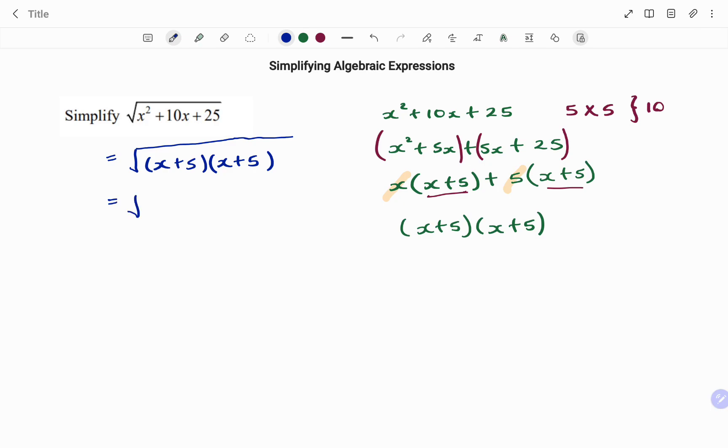Applying the laws of exponents, x times x with the power of 1 is the same as x to the 1 plus 1, which equals x squared. So what I have in the brackets is x plus 5 all squared.